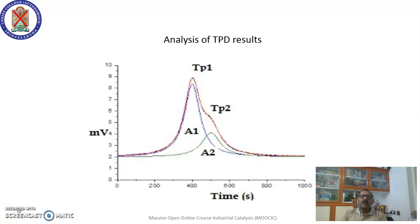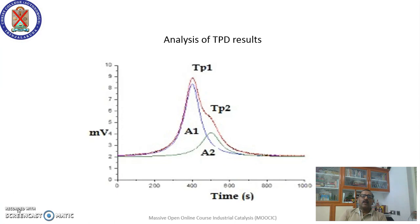In analyzing a TPD result, the red curve shown has two maxima — peak temperature one (T_p1) and peak temperature two (T_p2). The area under the curve gives the total number of acid sites. When ammonia is injected it adsorbs on acidic sites; once physisorbed ammonia is removed and temperature is raised, chemisorbed ammonia evolves and immediately gives a detector response.